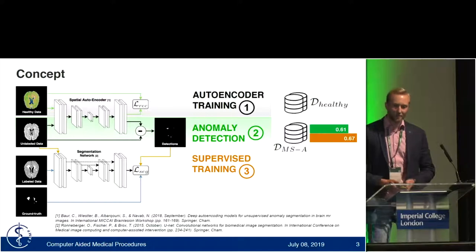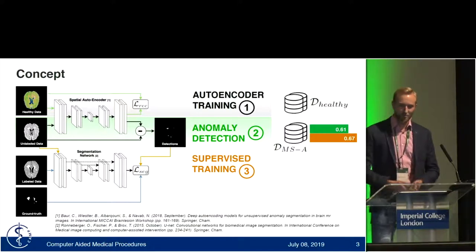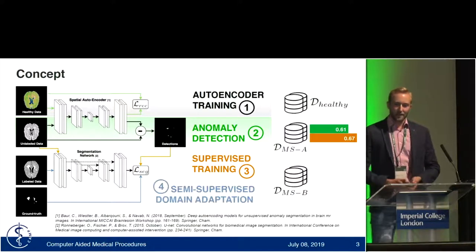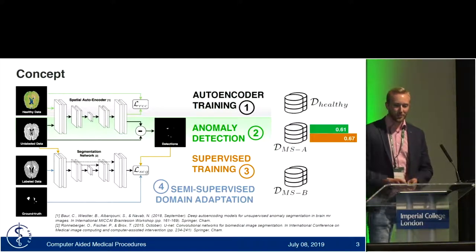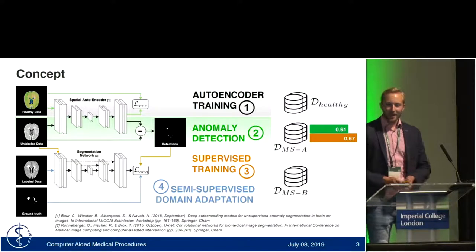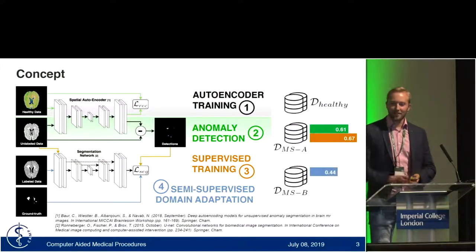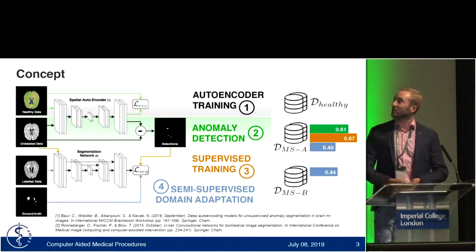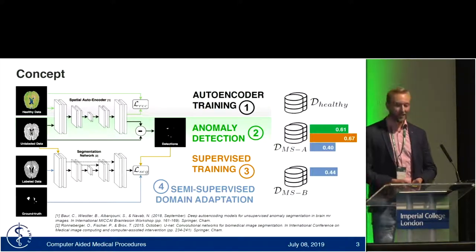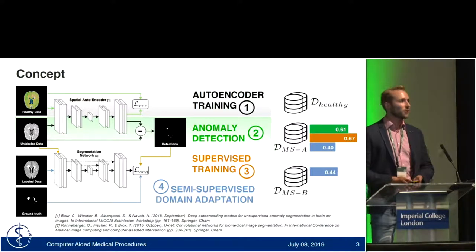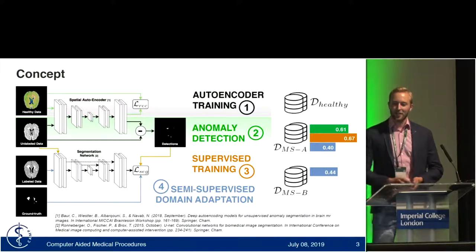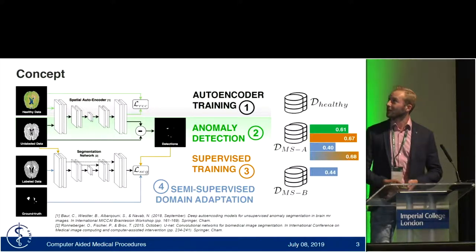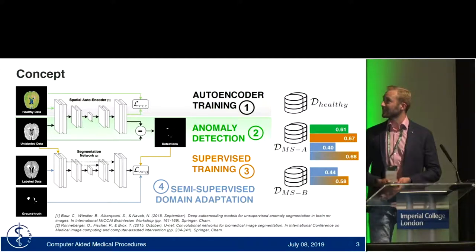You can also turn this into a semi-supervised framework. Let's say you have a scanner B dataset and you train on this B dataset — you get a Dice score of 44% on the testing set for scanner B and 40% on scanner A. But if you inject the unlabeled data together with these autoencoder-generated segmentations, we get a dramatic improvement to 68% Dice score on scanner A and 58% on scanner B.